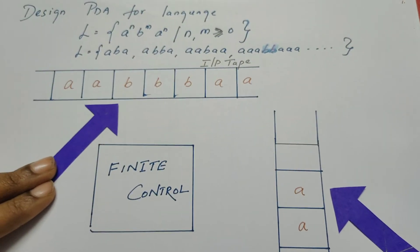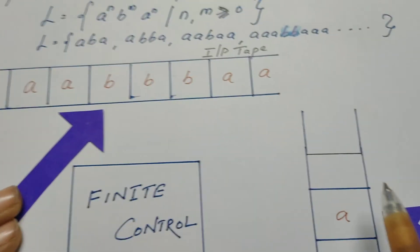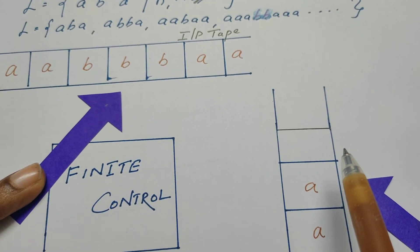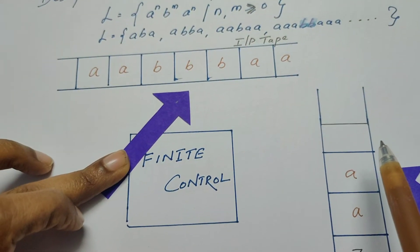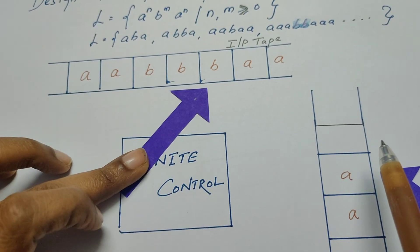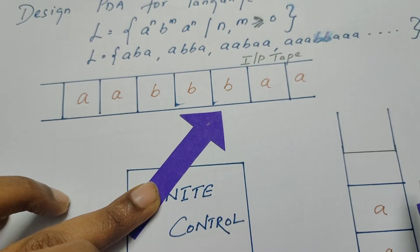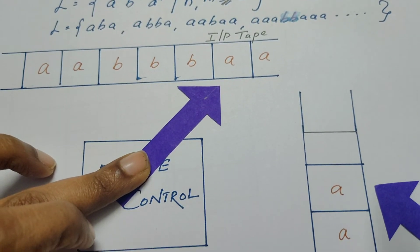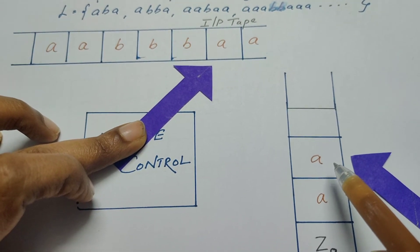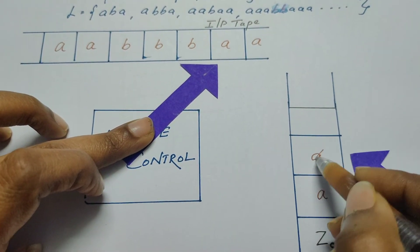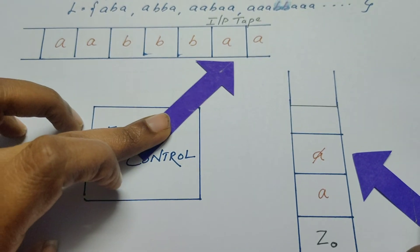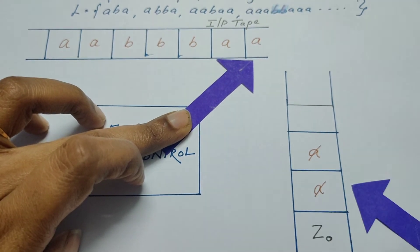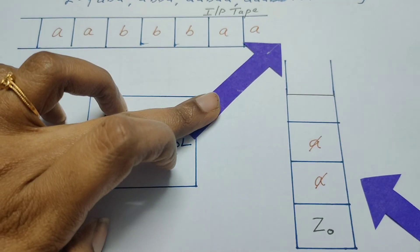Now it starts reading b. When it reads b there is no operation on the stack — it just keeps reading the b's and moves in the right-hand direction. It reads the second b, then the third b. Once it starts reading the right-hand side a's, whatever is at the top of the stack is popped out. The second a is then read and the remaining a at the top of the stack is also popped out.